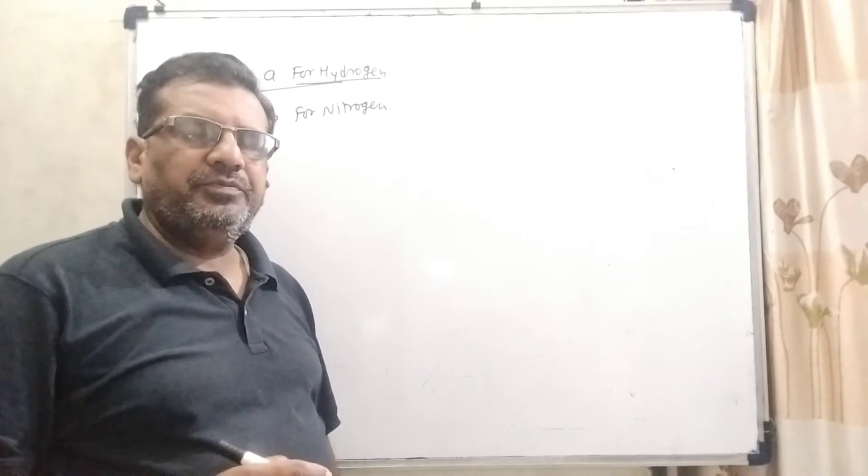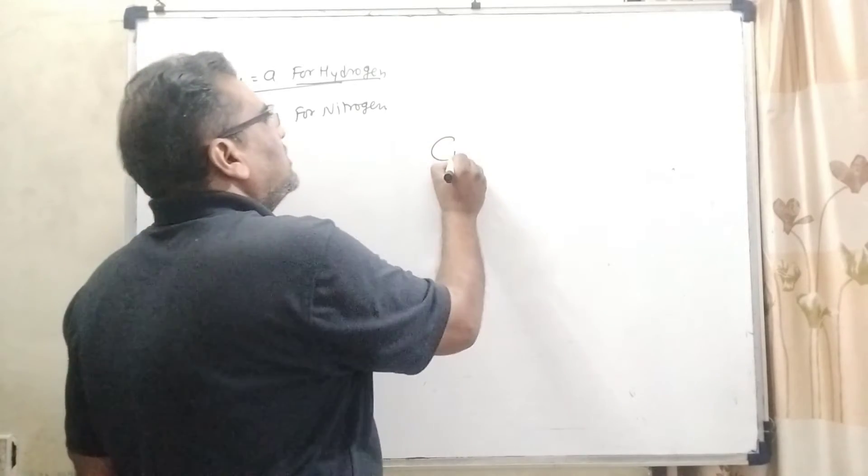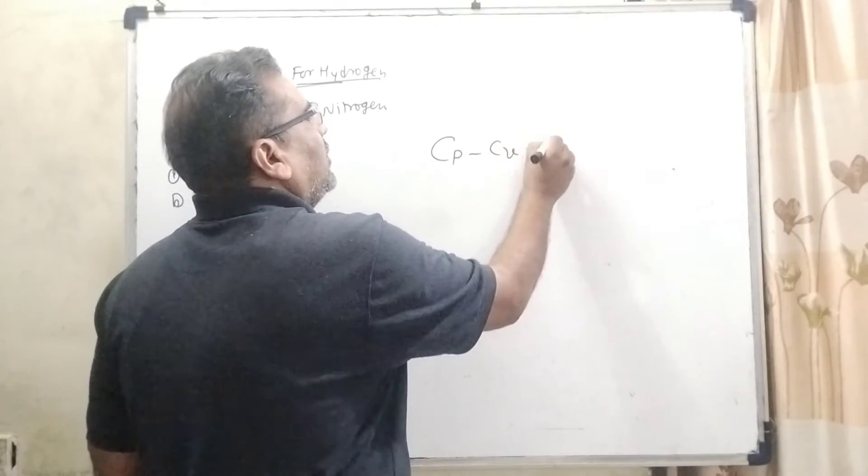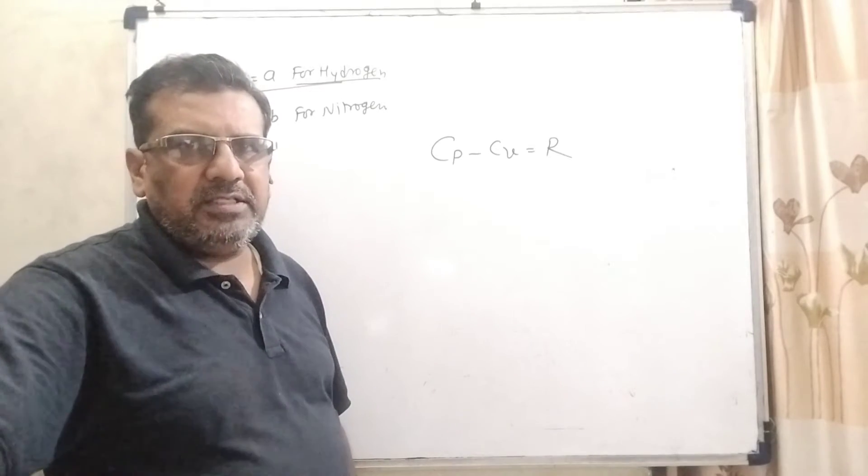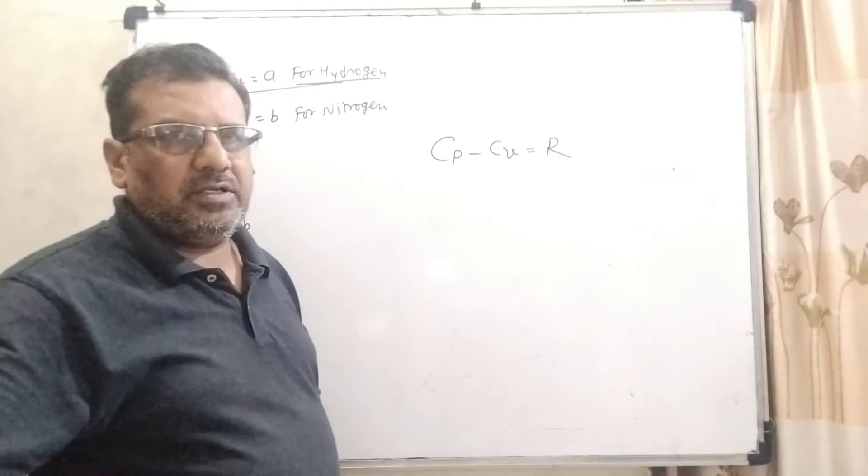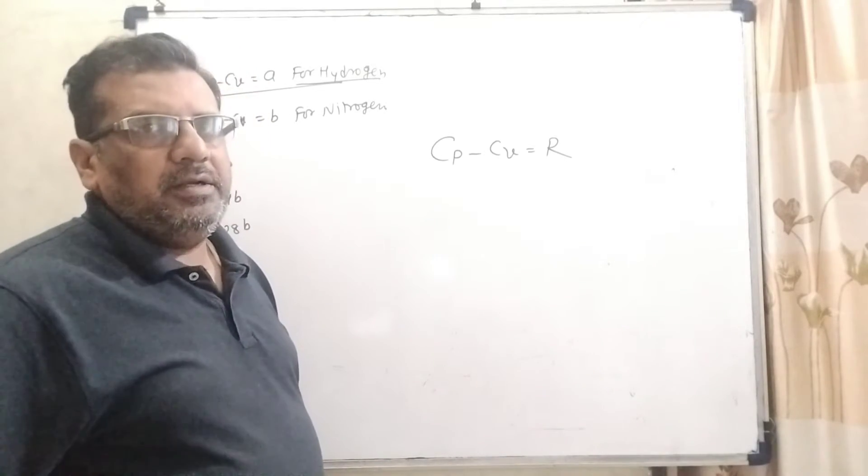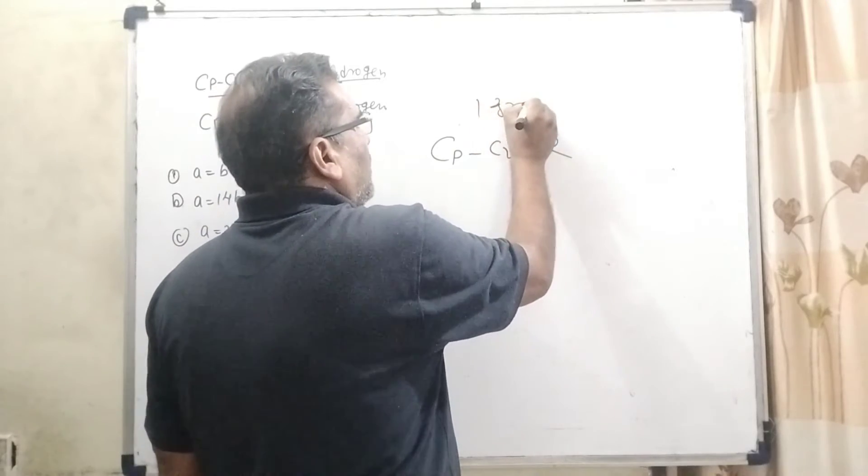In this question, we are using Mayer's formula. What is Mayer's formula? Cp minus Cv equal to R. What is Cp? Cp is specific heat of gas at constant pressure and Cv is specific heat of gas at constant volume and R is gas constant. Here we have taken 1 gram mole.